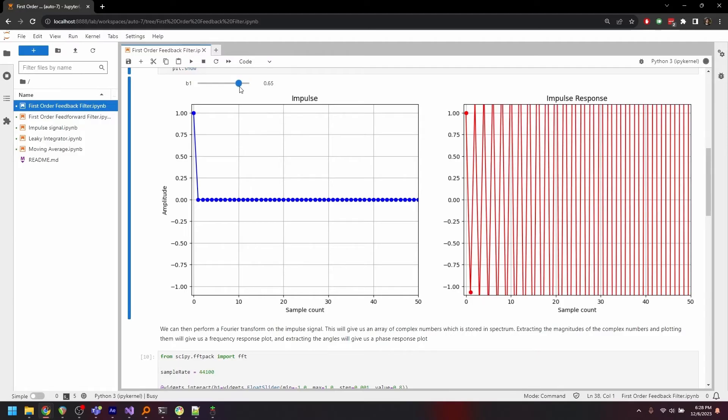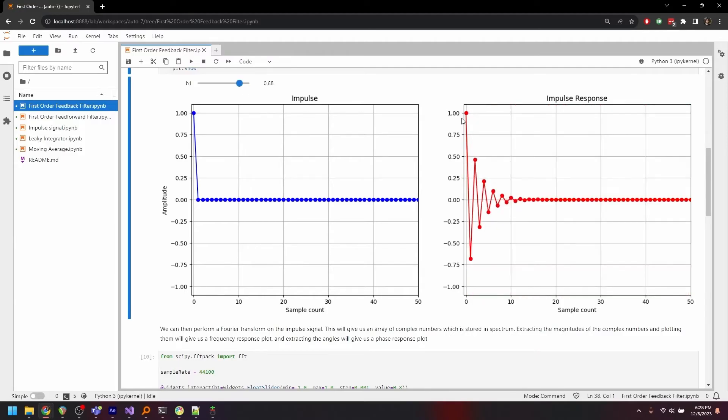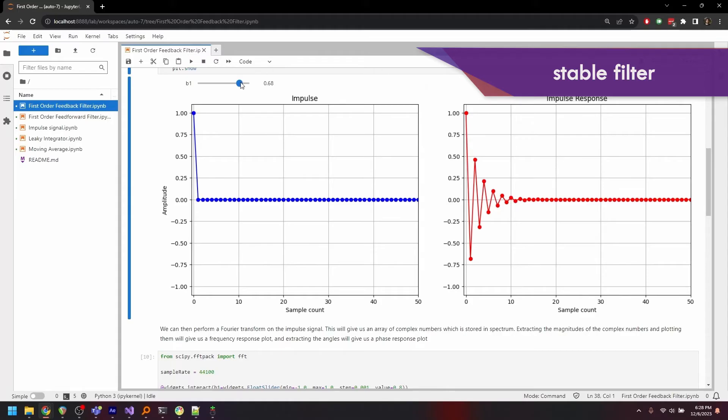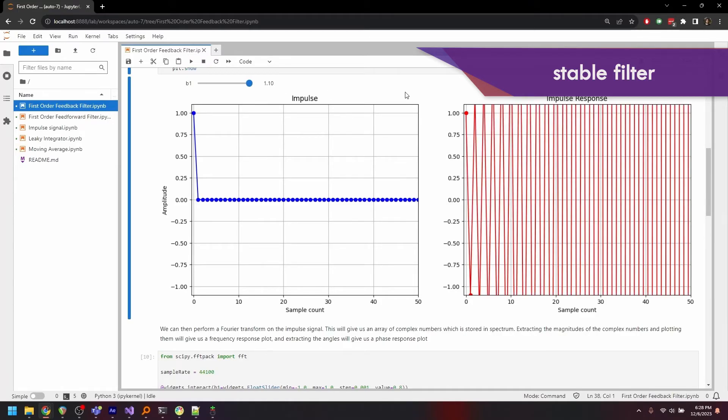So you can actually make a blanket statement here about the stability of an IIR filter by looking at the time domain impulse response. If the impulse response decays, if the response tends towards zero over time, then the filter is set to be stable. But if the response never tends towards zero or grows over time, the filter is unstable. As simple as that.